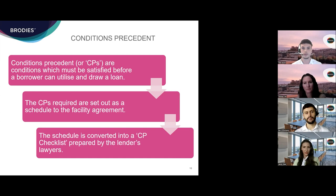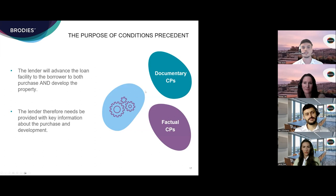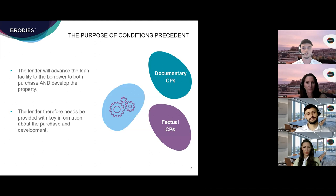Usually the lenders' lawyers prepare the CP checklist and, as the borrower or their advisors produce the CP documents, the checklist is updated and recirculated to the parties — this way all parties can see the status of each CP. As a trainee within the banking team, one of my main roles in any loan transaction is centred around actively managing the CPs, ensuring the checklist is closely monitored and updated whilst also attending regular conference calls where all lawyers from all parties discuss the progress of the CPs.